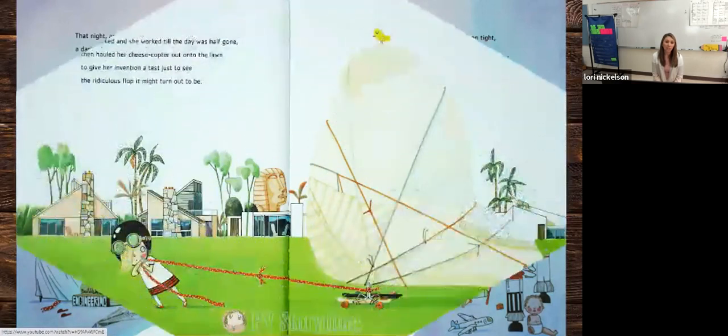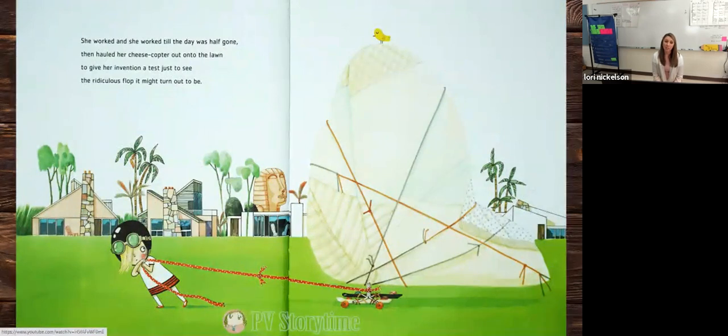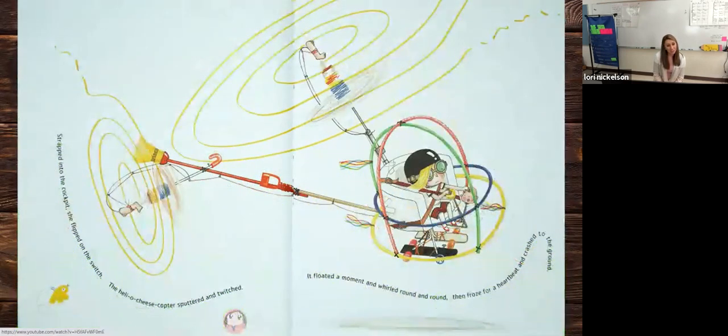She worked and she worked till the day was half gone. Then hauled her cheese copter out onto the lawn to give her invention a test just to see the ridiculous flop it might turn out to be. Strapped into the cockpit, she flipped on the switch. The helio cheese copter sputtered and twitched. It floated a moment and whirled round and round, then froze for a heartbeat and crashed to the ground.